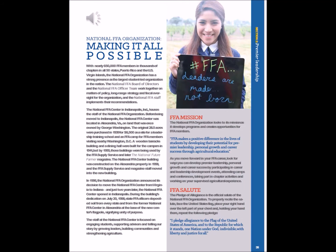The National FFA Center in Indianapolis, Indiana, houses the staff of the National FFA Organization. Before being moved to Indianapolis, the National FFA Center was located in Alexandria, Virginia, on land that was once owned by George Washington. The original 28.5 acres were purchased in 1939 for $8,500 as a site for a leadership training school and an FFA camp for FFA members visiting nearby Washington, D.C.